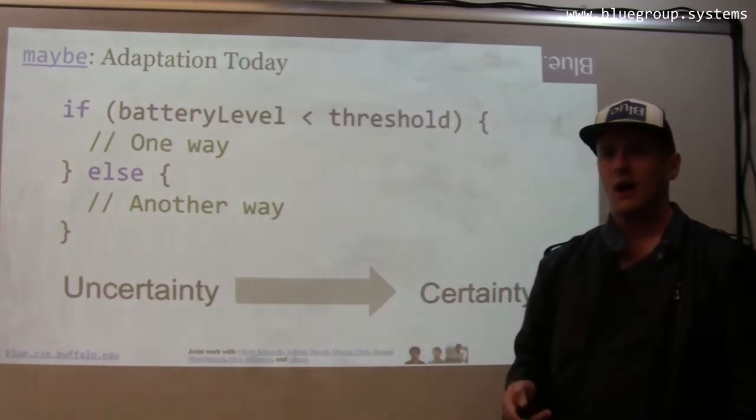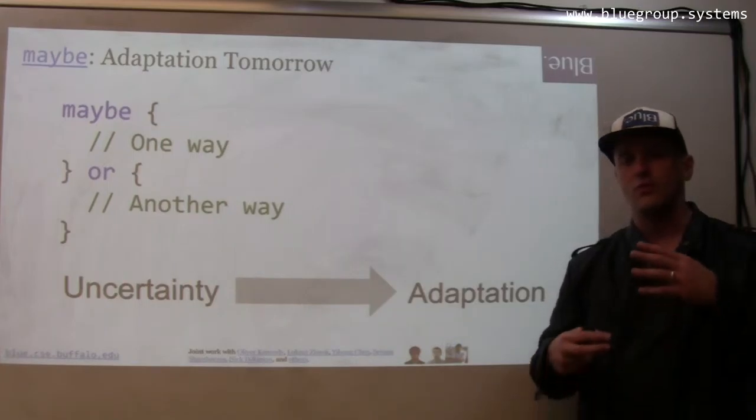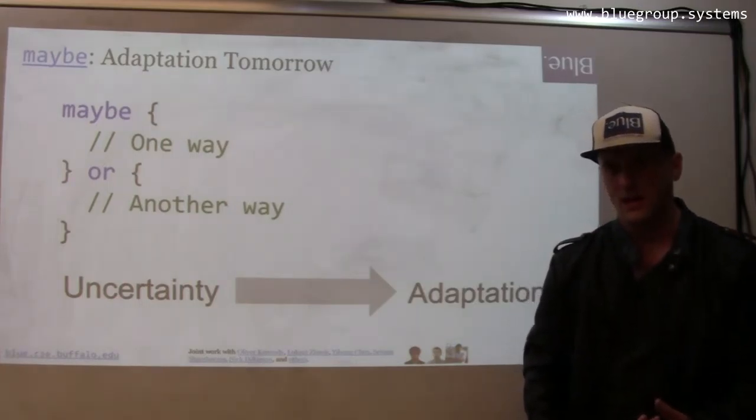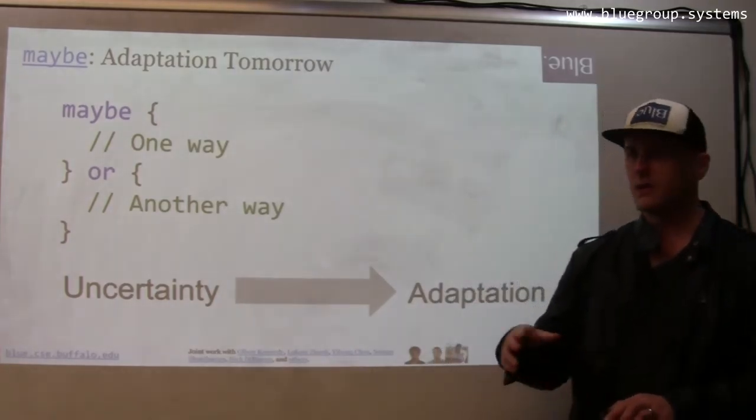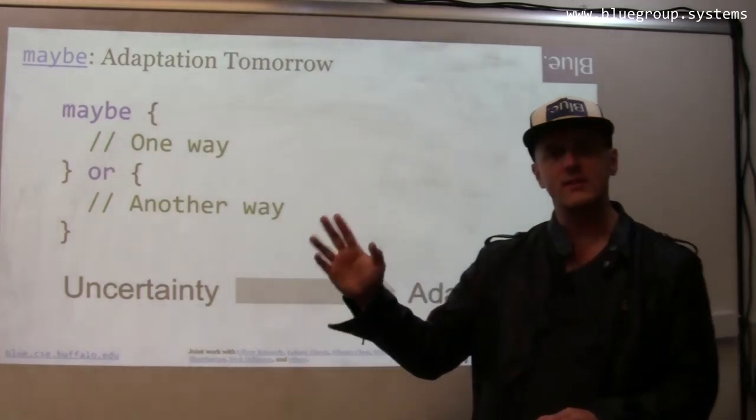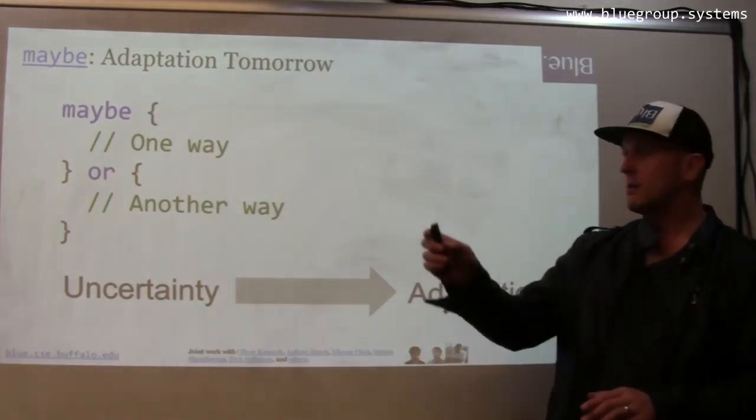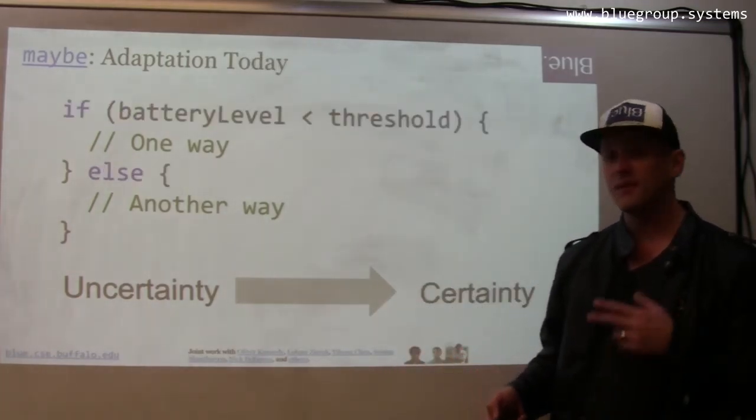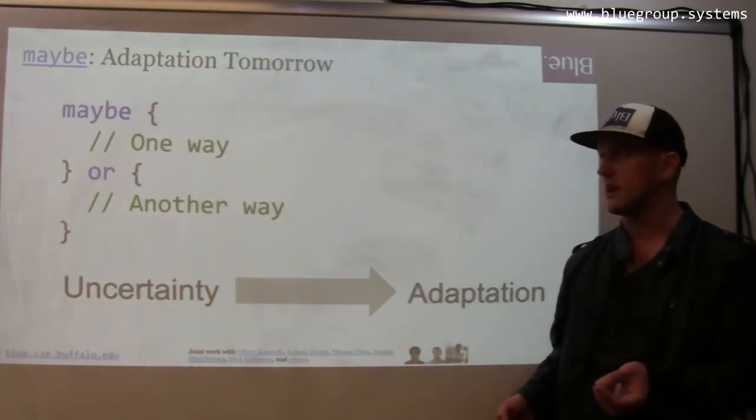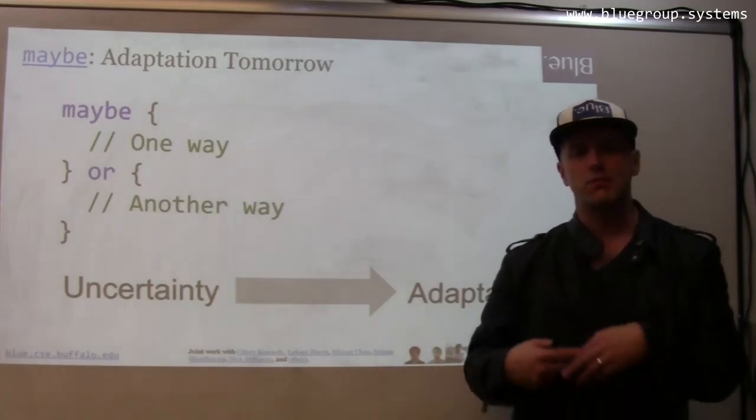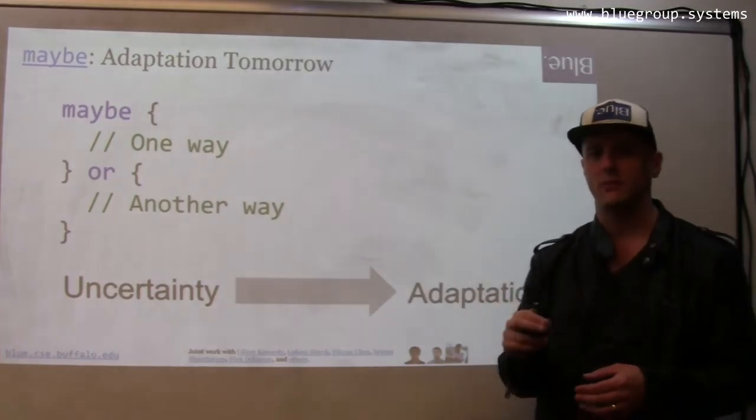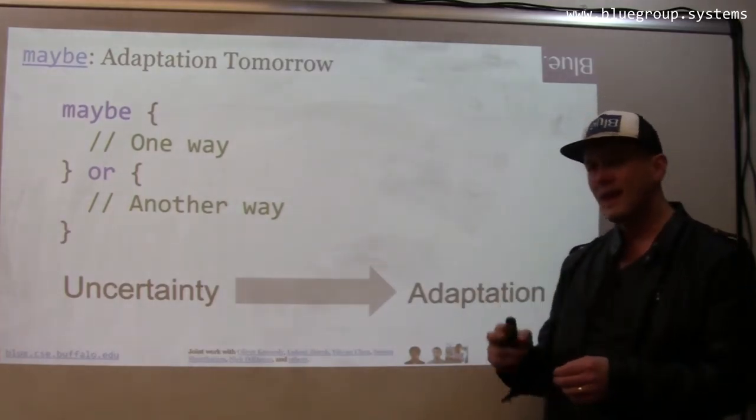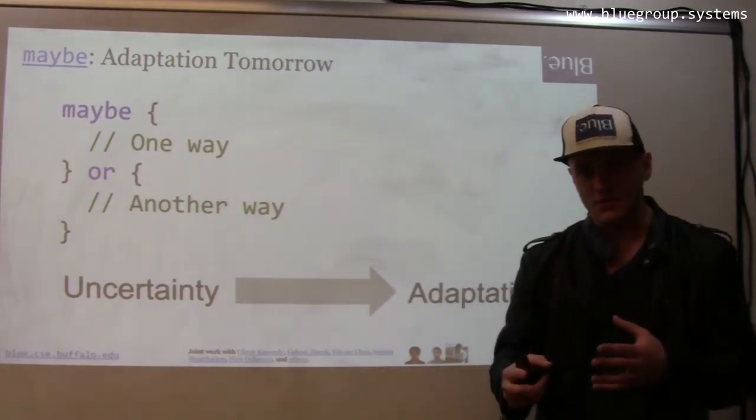Our observation is quite simple, which is maybe we can remove the need for developers to make decisions at development time and instead allow them to express flexibility. So what does this mean? This is one way of doing this. You can imagine replacing an if-else statement that requires logic constraints with a maybe statement that just provides information to the runtime system that there are alternatives available at this part of the code. And then the developer doesn't have to make this choice.